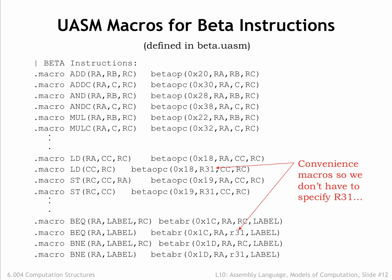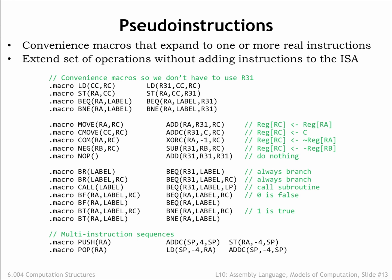So we define two-argument branch macros that automatically provide R31 as the destination register — saving some typing and, more importantly, making it easier to understand the assembly language program. Here are a whole set of convenience macros intended to make programs more readable. For example, unconditional branches can be written using the BR macro rather than the more cumbersome BEQ R31, and it's more readable to use branch false and branch true macros when testing the results of compare instructions.